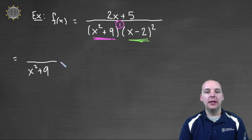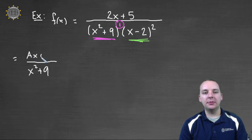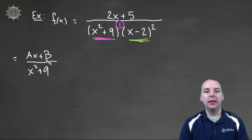Now the numerator has to be linear, since that's a quadratic. So we'll write Ax plus B, right? Some mystery linear term here. Alright, now let's move on to the second term here.